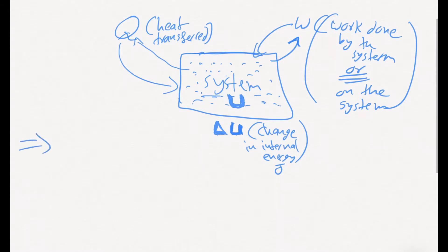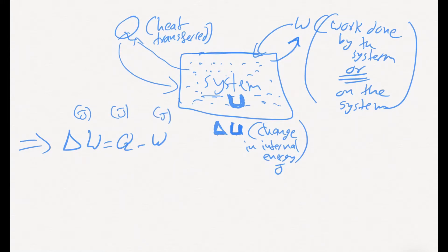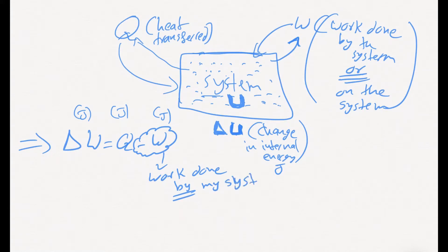The first law of thermodynamics states that the change in internal energy equals Q minus W, all in joules. Q can be either positive or negative: if heat is going into the system it's positive, and if it's leaving the system it's negative. We consider minus W as work done by the system, and if the system is having work done on it, we switch it to plus W — work done on the system.